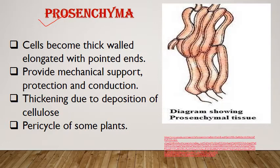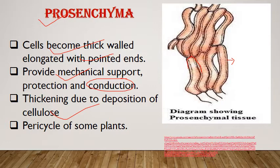The next type of parenchyma is prosenchyma. These are thick-walled cells with tapering ends, meant for providing mechanical support. They are elongated, with pointed ends that provide protection and also help in conduction. The thickening in prosenchyma is of cellulose, not lignin. Some pericycles of certain plants are also made up of this type, known as prosenchyma.